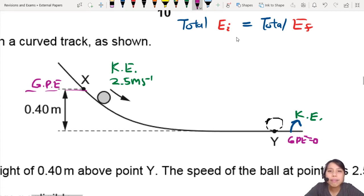So in the beginning, what do you have? Well, you can say I have GPE, so I can do MGH, right? Yeah, you can do MGH. So MGH plus half M, what do you call that? V squared. So this V here will be 2.5 squared.